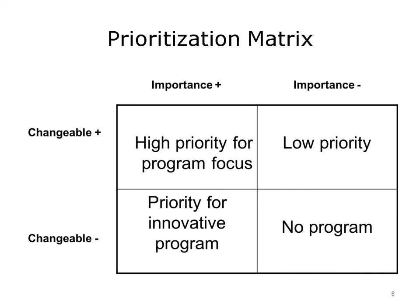It might be a good exercise for you to think about different programs in your community and place them in these various boxes. If you want to work on a problem of low importance but it is easy to change, the matrix would recommend a low priority for that intervention. On the other hand, if you have an important health status feature that's not very easy to change, the matrix would indicate priority only for an innovative program.